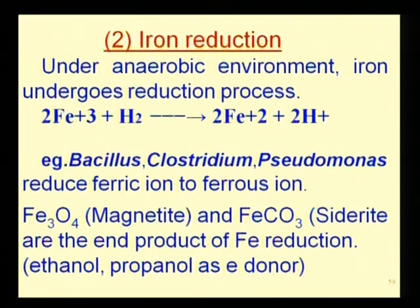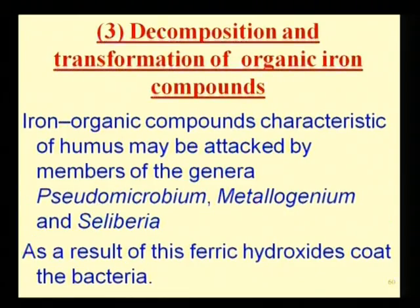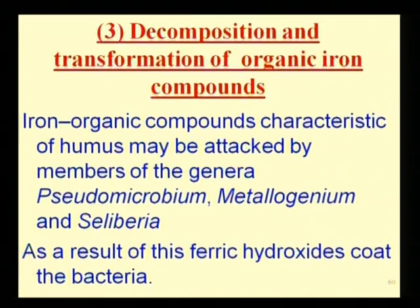During ferric reduction and oxidation, magnetite and siderite are formed as end products. The electrons required for this formation are supplied by ethanol and propanol. Humus-containing iron compounds are often attacked by Pseudomicrobium and Metallogenium organisms, which form ferric hydroxides deposited as coatings on bacteria or in the form of filaments.